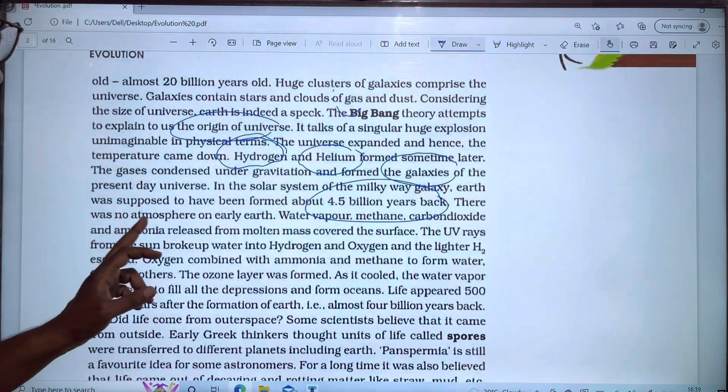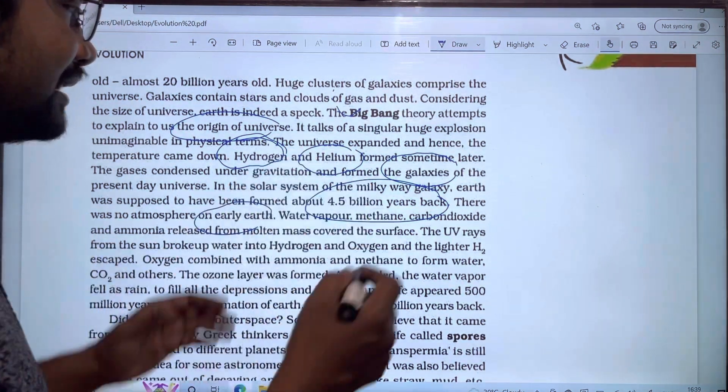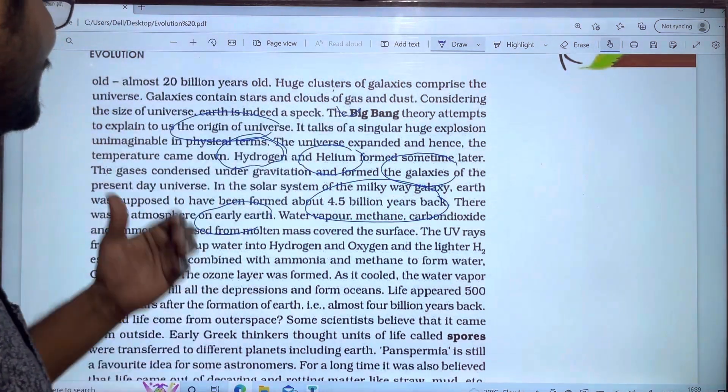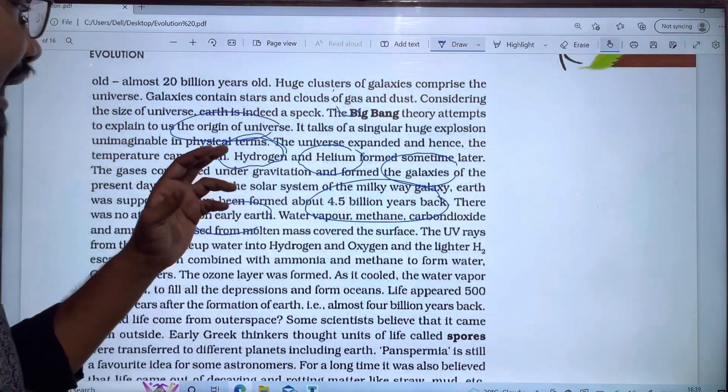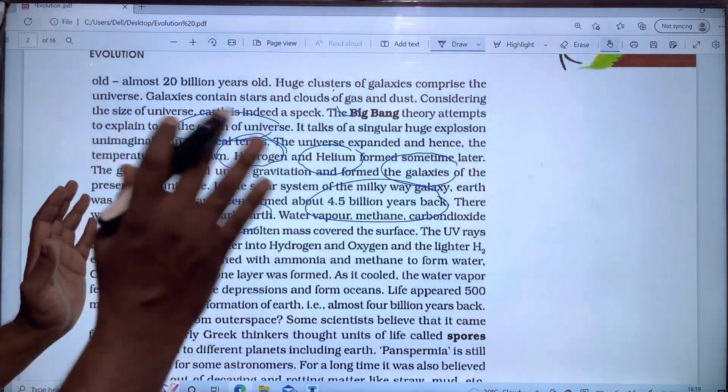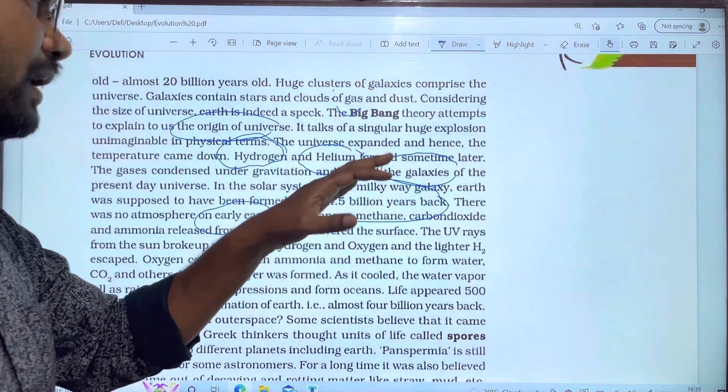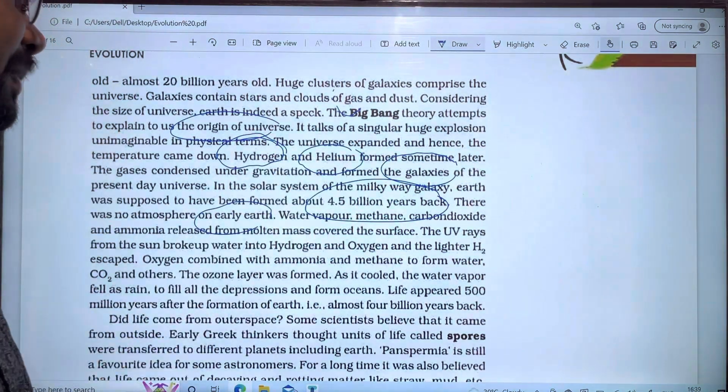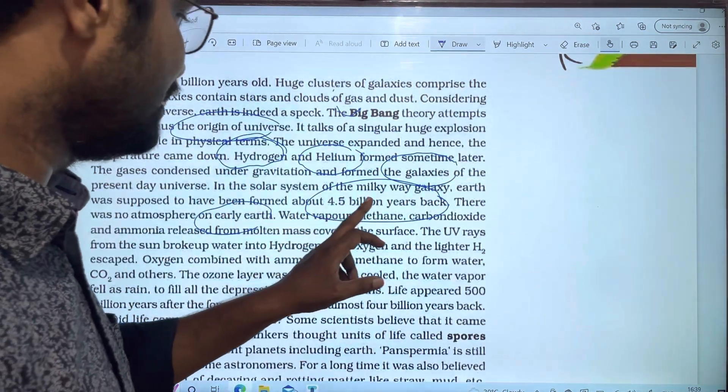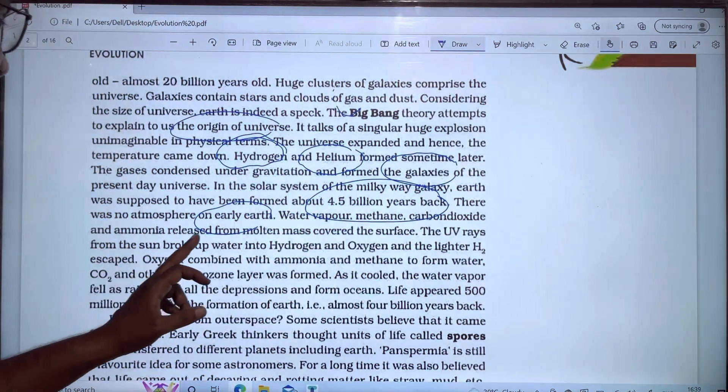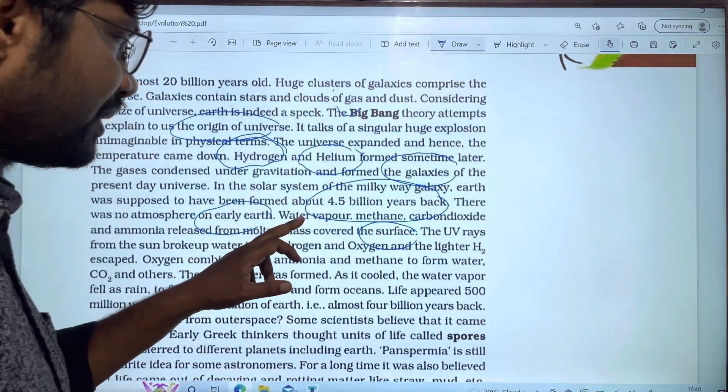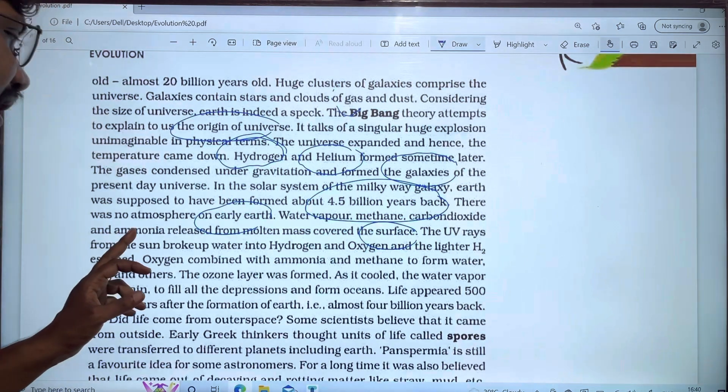There was no atmosphere on early Earth. Water vapor, methane, carbon dioxide, and ammonia are released from molten mass. Water vapor, methane, carbon dioxide and ammonia are released from the surface.